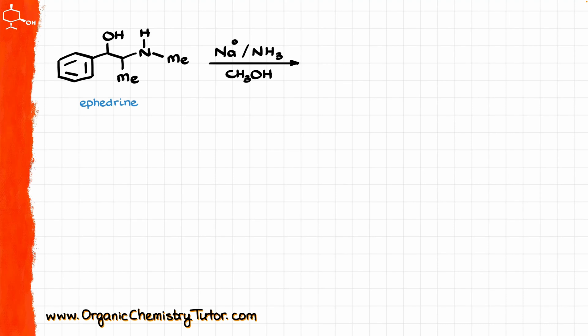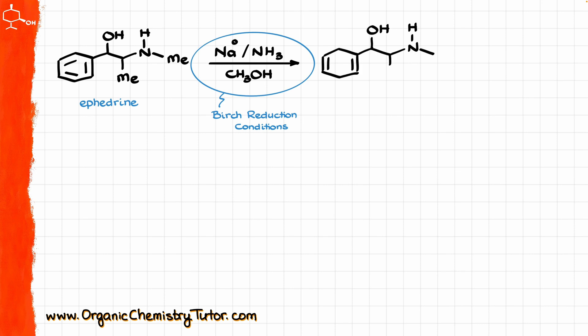So what would happen if we take ephedrine and we treat it with sodium metal in liquid ammonia? Well, a keen observer might recognize that as the Birch reduction conditions, so that would be reasonable to assume that our product in this reaction is going to be this molecule, right?